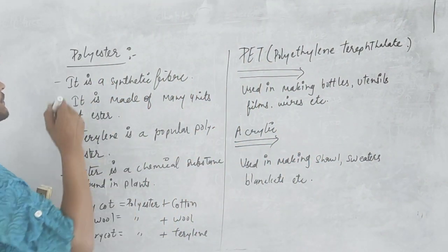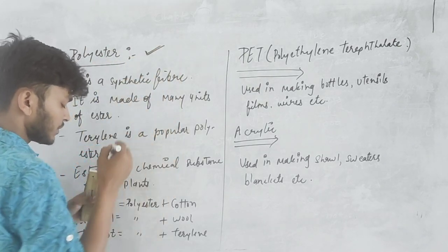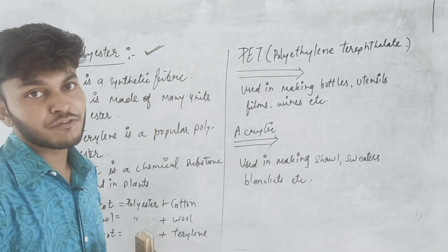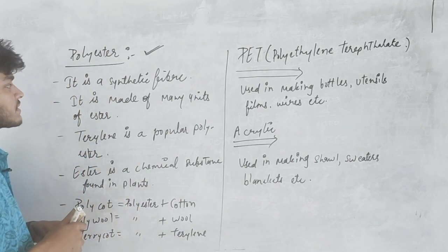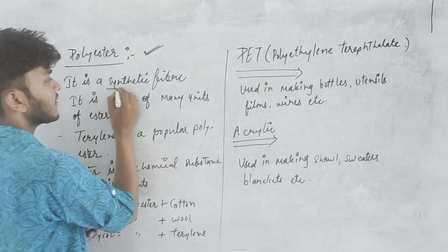First, we will talk about polyester. Polyester is a synthetic fiber which is made of chemicals, where the word synthetic means made of chemicals. It is a synthetic fiber, right?